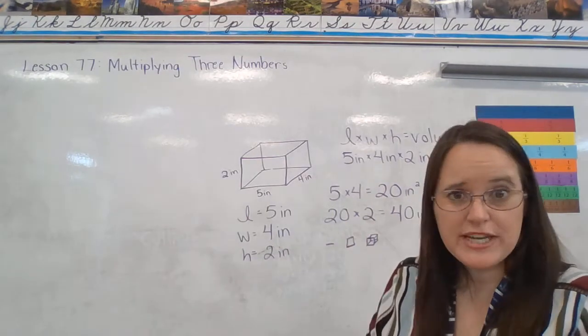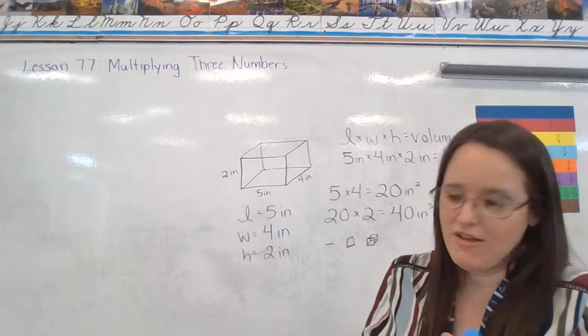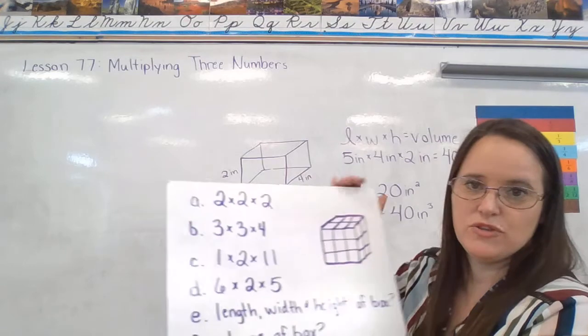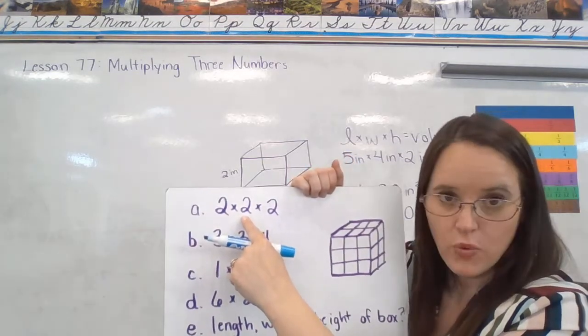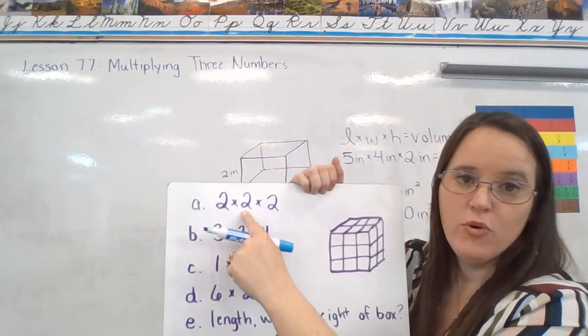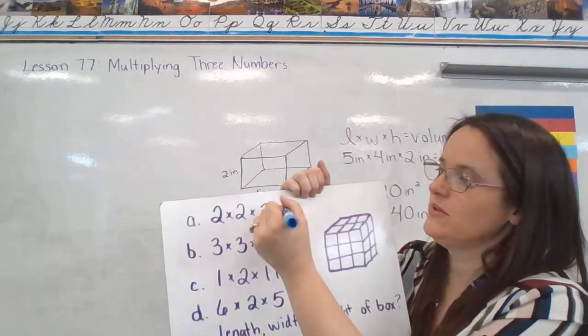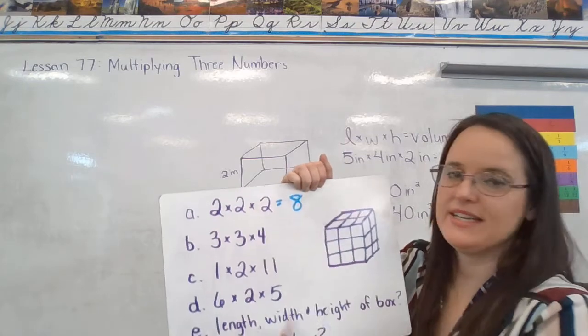Okay. So A, 2 times 2 times 2, they're all the same. Doesn't matter which two you multiply first. We're really just going to count. 2 times 2 is 4. And so 4 times 2 is going to give us 8.